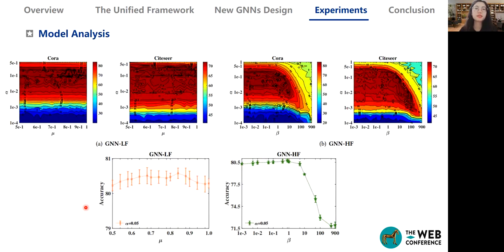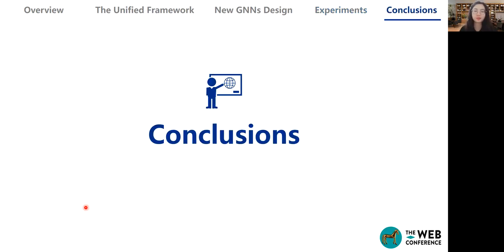We find that GNN-LF or HF greatly solve the over-smoothing problem, while the performance does not drop when the depth increases. We further analyze the performance under different impact factors, including alpha, mu, and beta, and we show the heat map for accuracy with the datasets.